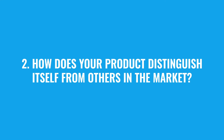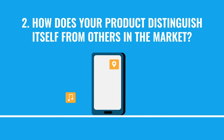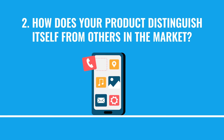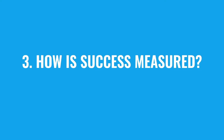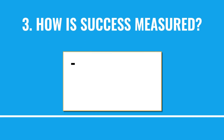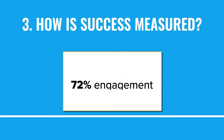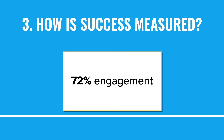Understanding the unique selling point of the product is helpful for the client and the team, so they know exactly how it can stand out in the market. Number three: how is success measured? Whether qualitative or quantitative, numerical or with percentages, having a predetermined way to measure success is helpful as the project progresses.